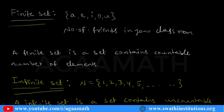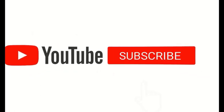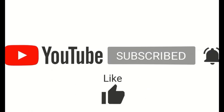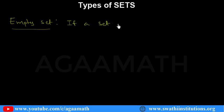We have a few more types. So let us see what they are. Another set is the empty set. So what is an empty set? Empty means nothing — if a set contains no elements.